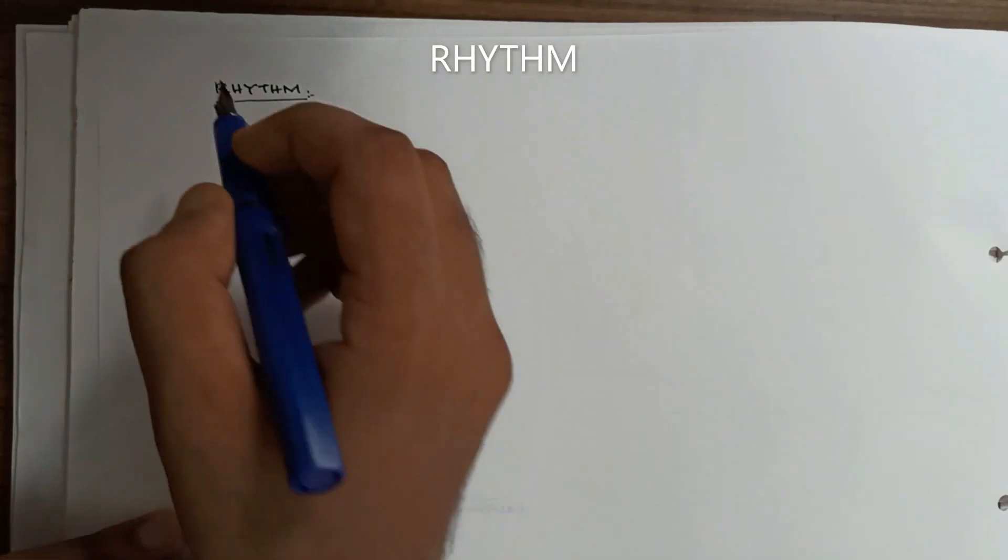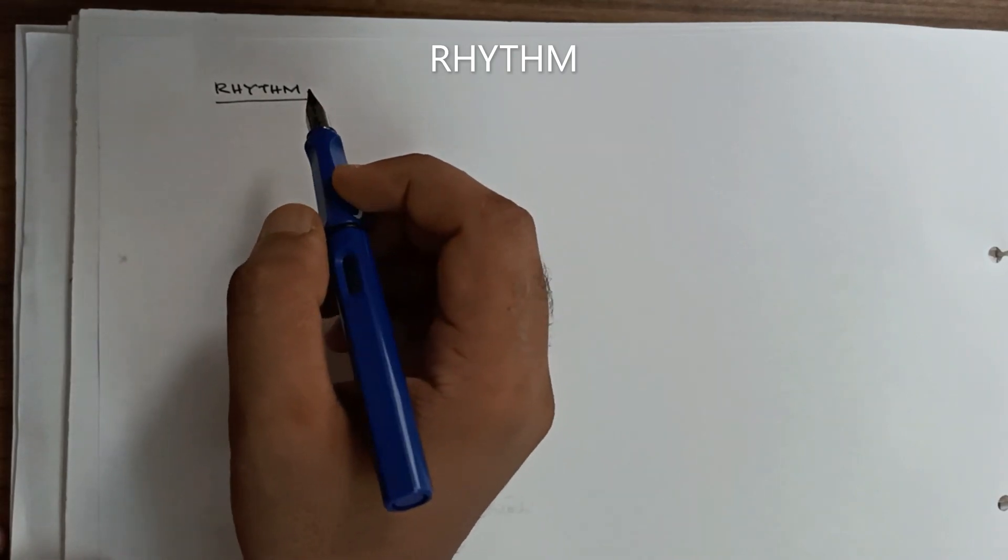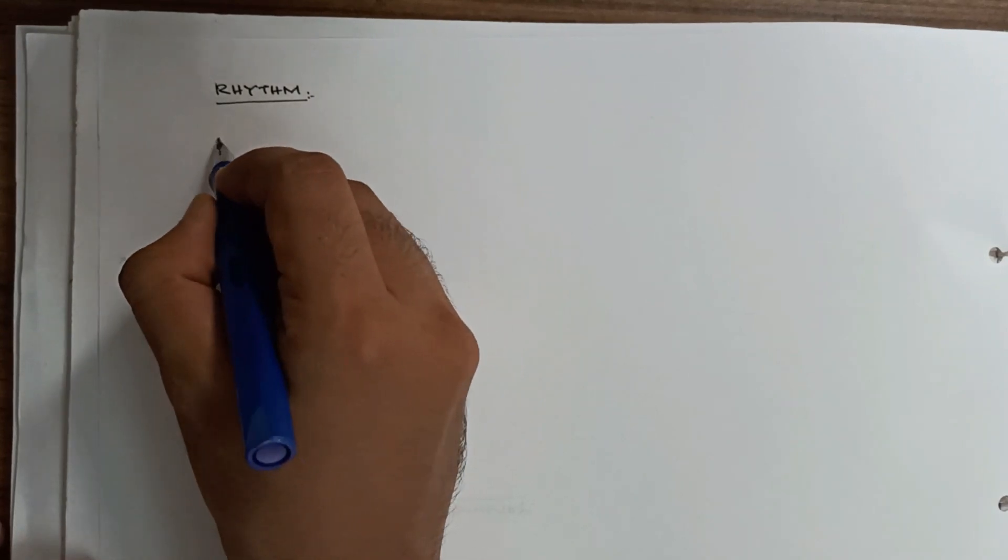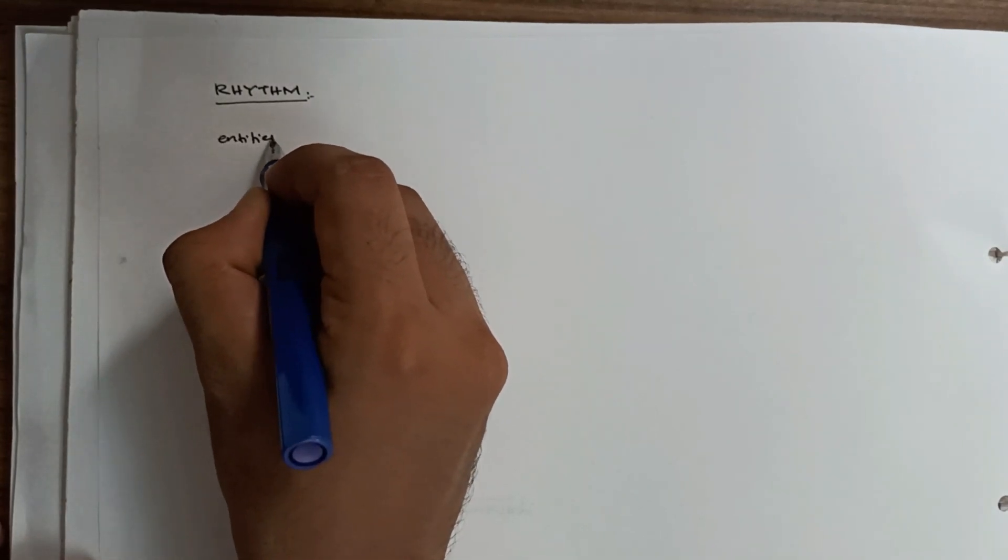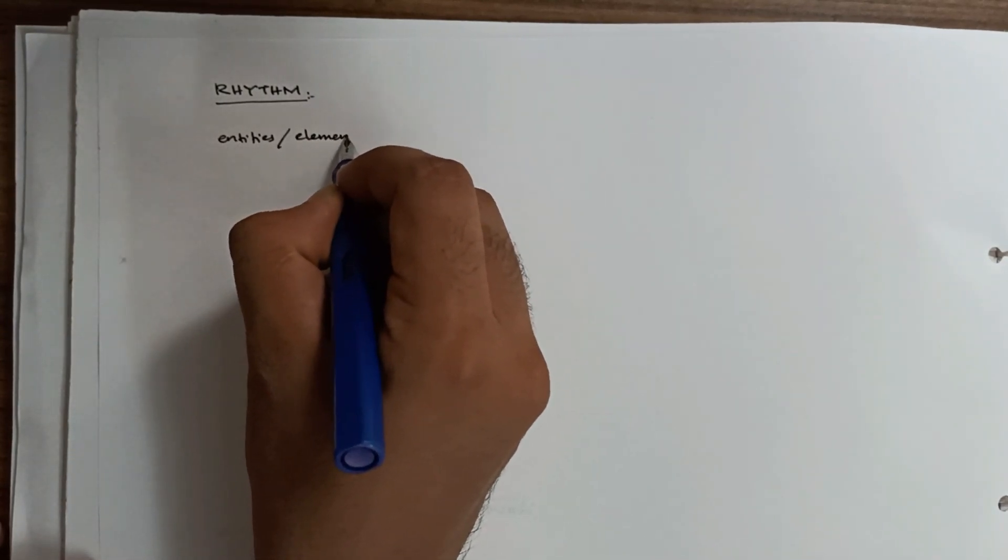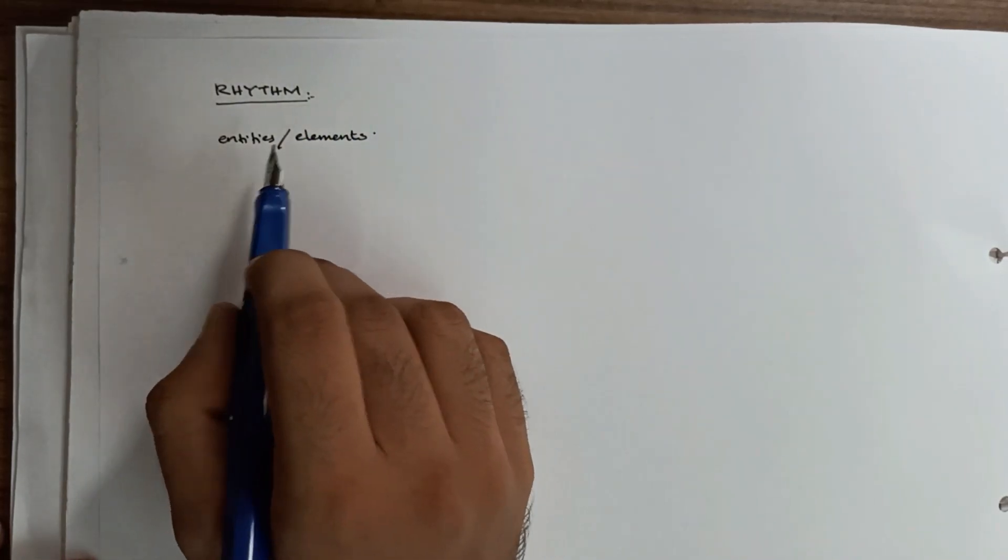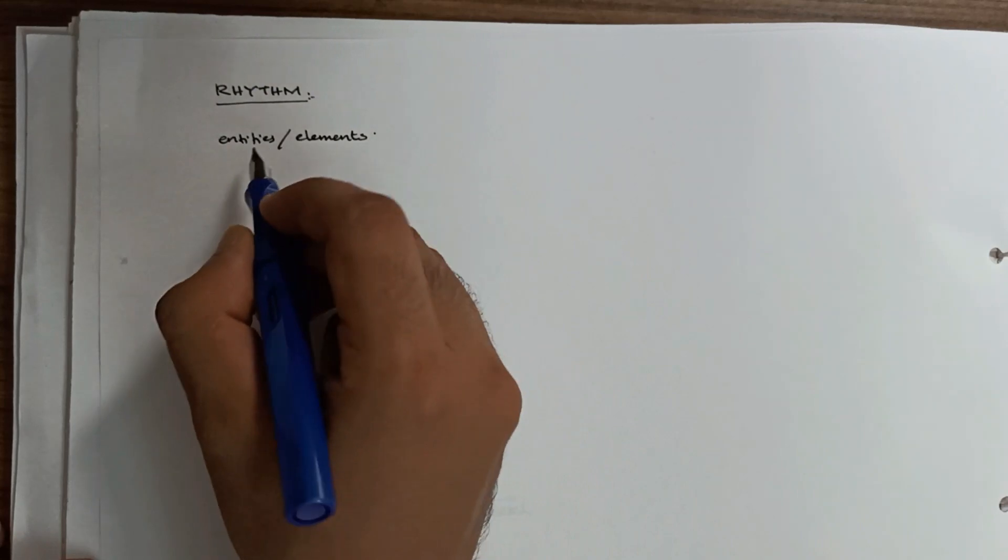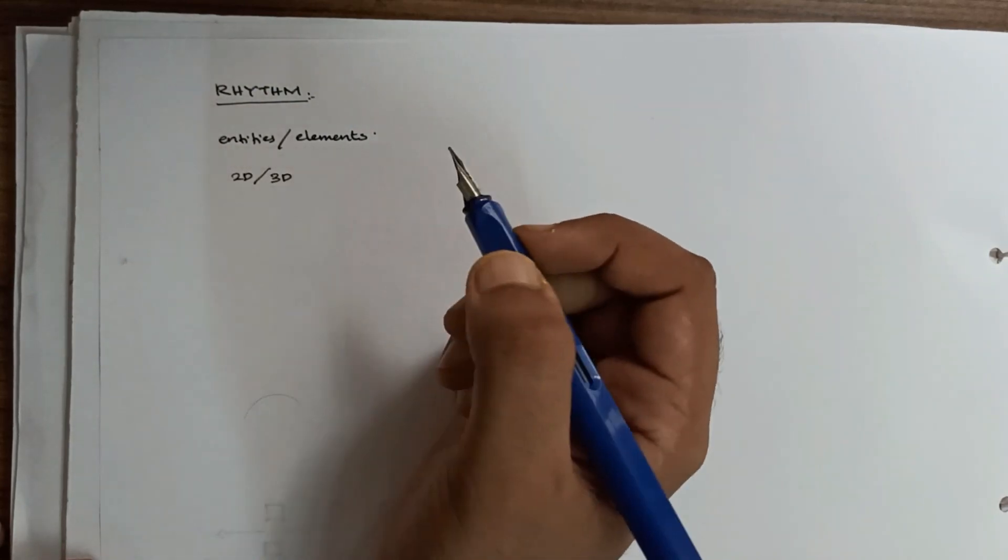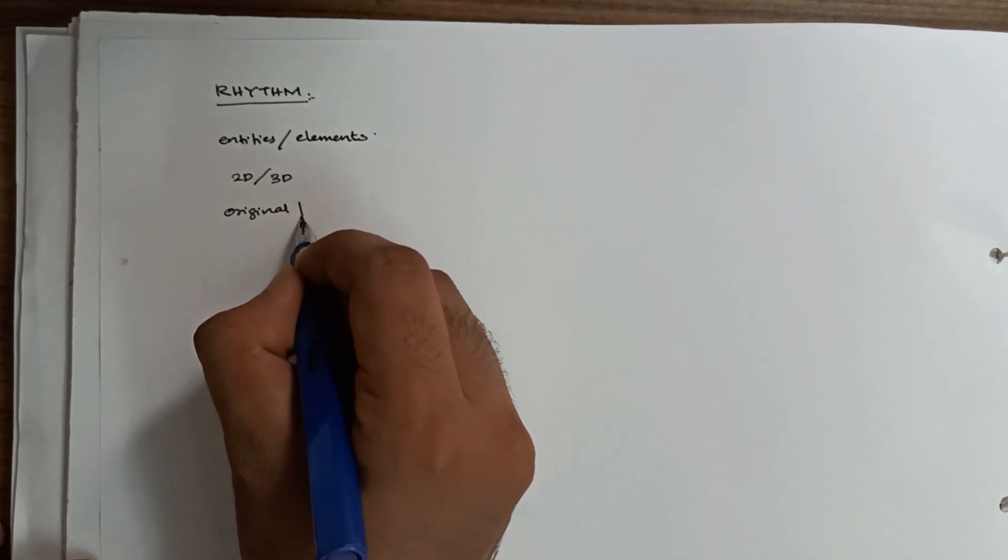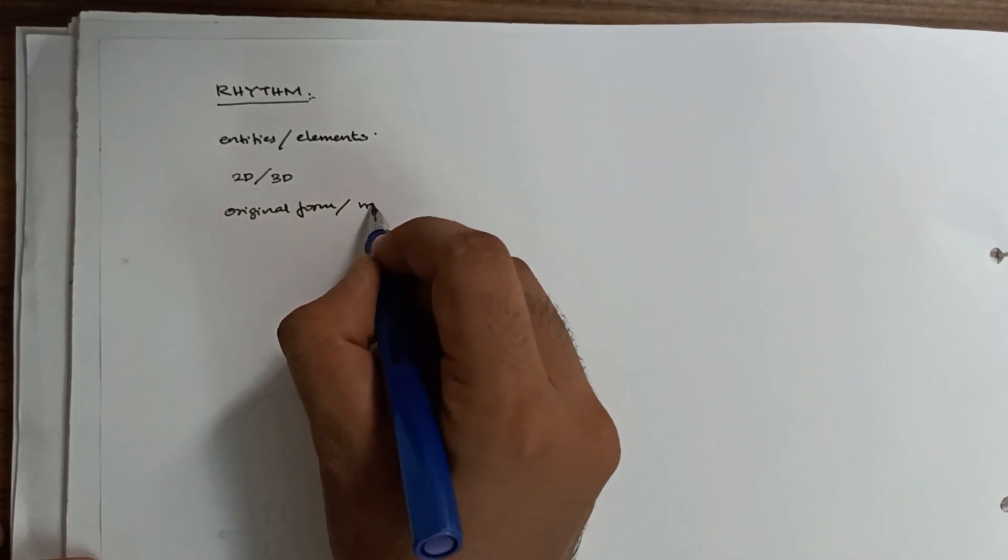Next let's discuss rhythm. Rhythm, by definition, is a repeated arrangement of entities or elements. It's a repeated arrangement of entities or elements across a particular space, either in 2D or three-dimensional space, either in their original form or in their modified form.